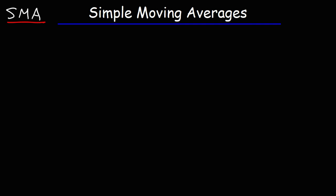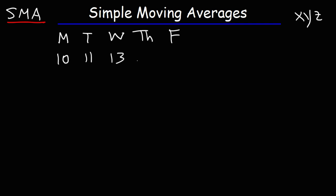Now let's talk about how we can calculate the moving average. Let's put some days of the week: Monday, Tuesday, Wednesday, Thursday, and Friday. Let's say that the closing price of stock XYZ is $10 on Monday, $11 on Tuesday, $13 on Wednesday, $14 on Thursday, and $16 on Friday.